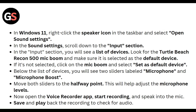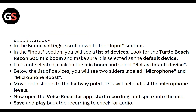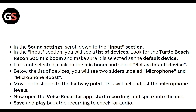Click on the mic boom and select Set as Default Device. Below the list of devices, you will see two sliders for microphone and microphone boost — move both sliders to the halfway point to adjust the microphone levels. Then open the Voice Recorder app, start recording, speak into the microphone, and play back the recording to check for audio.